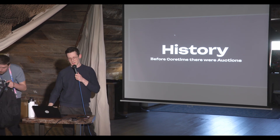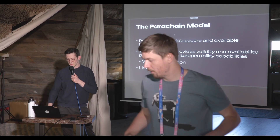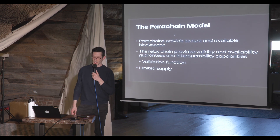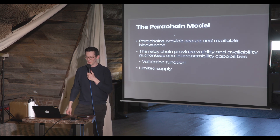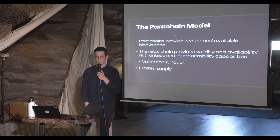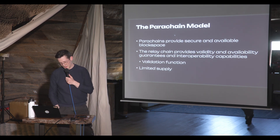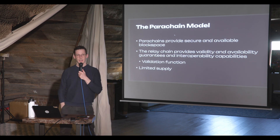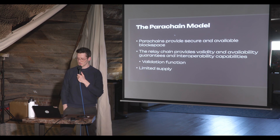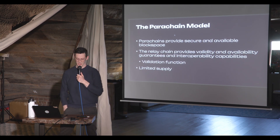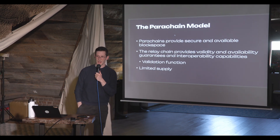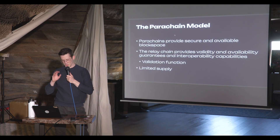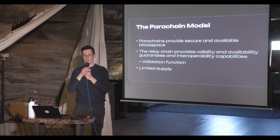The limited supply of slots was allocated through auctions in the parachain model. Parachains provide secure and available block space, and the relay chain provides validity, availability guarantees, and interoperability capabilities between chains. It uses something called the validation function — the way of determining if a parachain is behaving as expected. There is a limited supply of parachain slots; the number of parachains cannot be infinite, mainly because of the validation function.